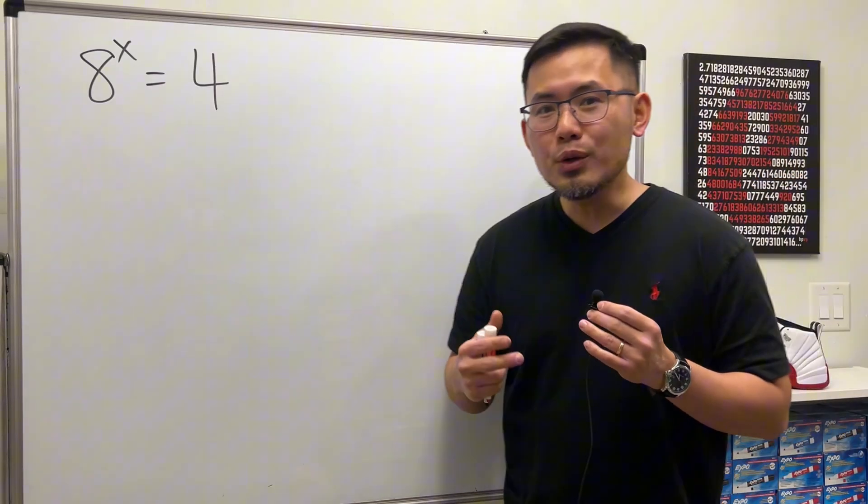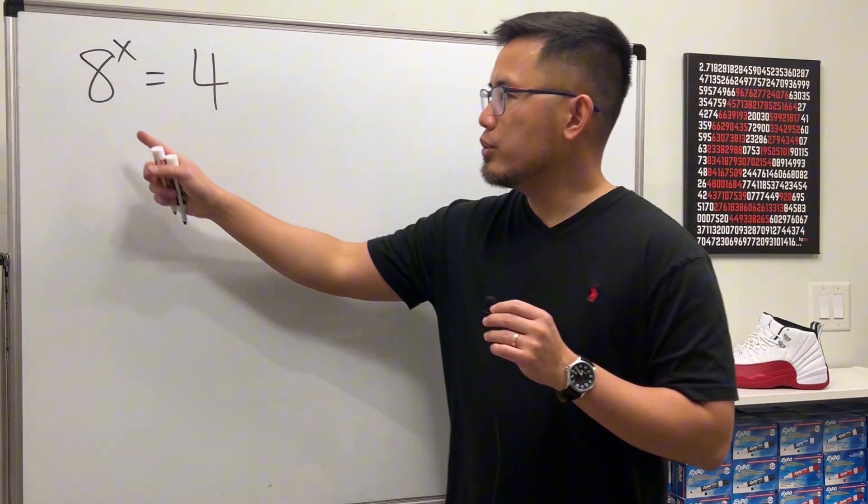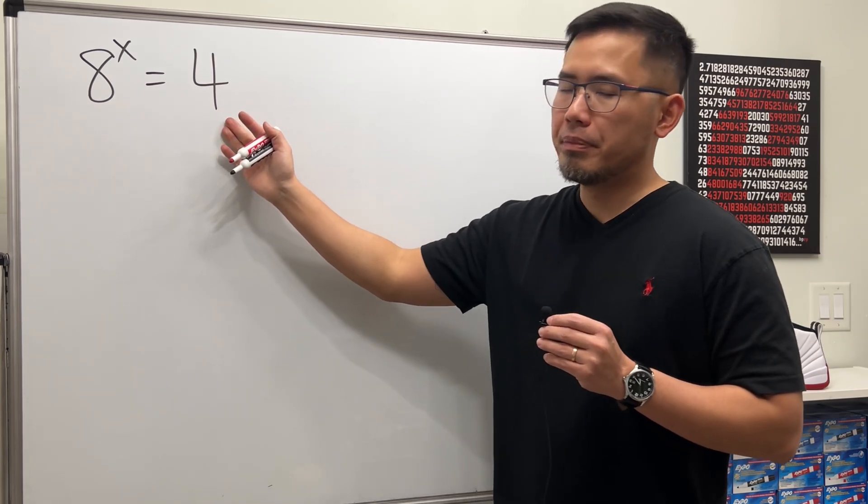So how do we solve this? How do we solve an exponential equation in general? Here's the first strategy: try to make both sides have the same base. Right here the base is 8, right here the base is 4.